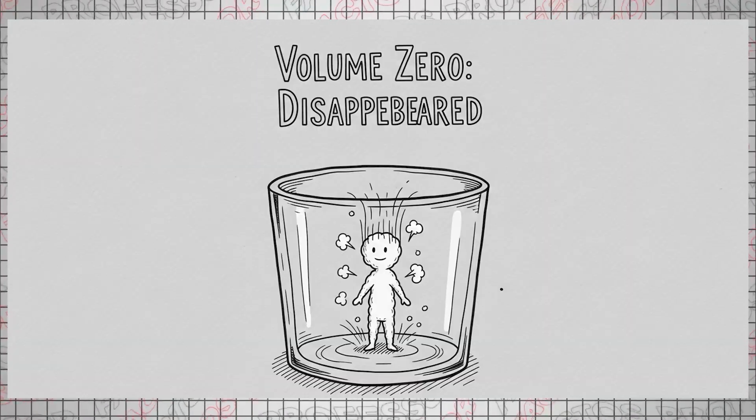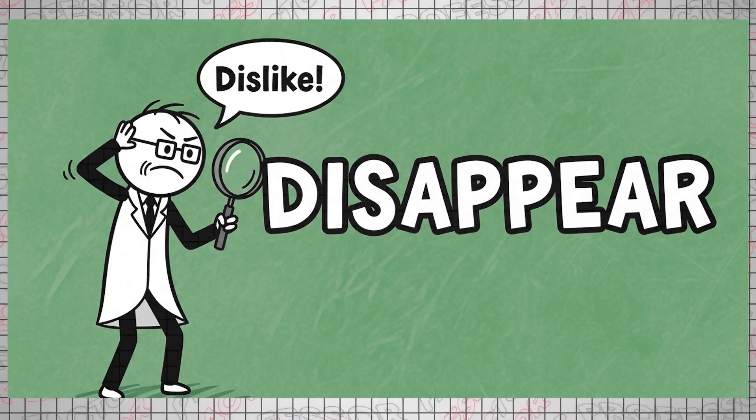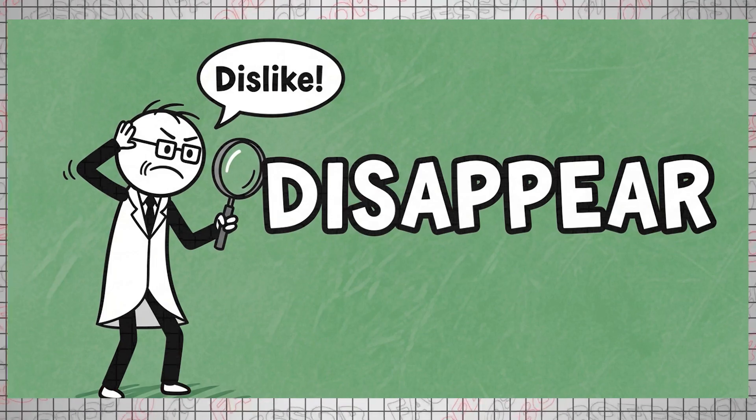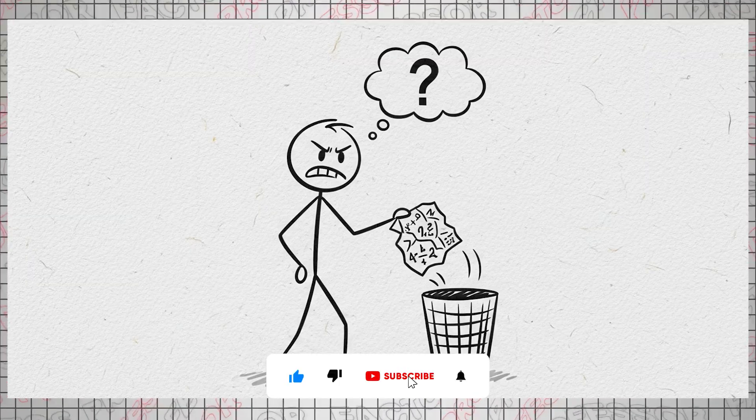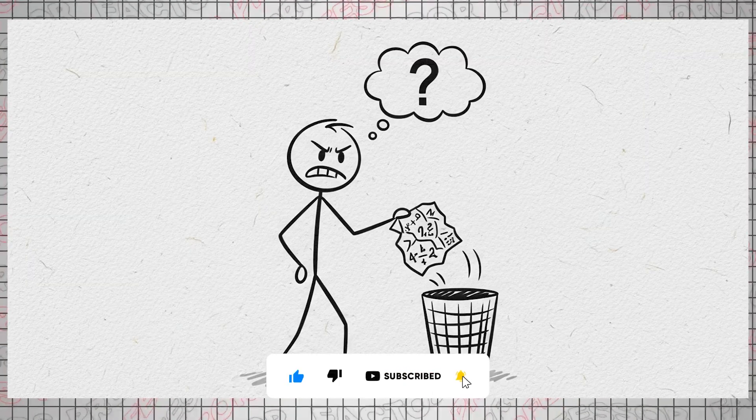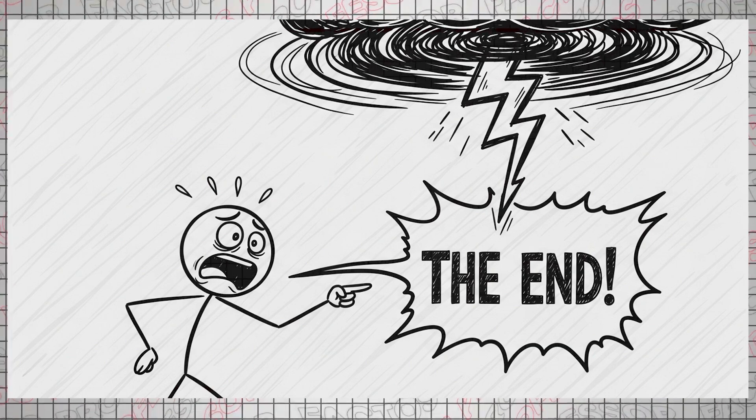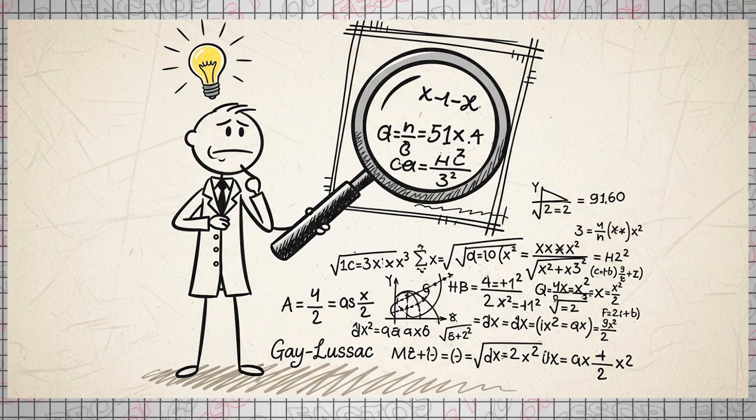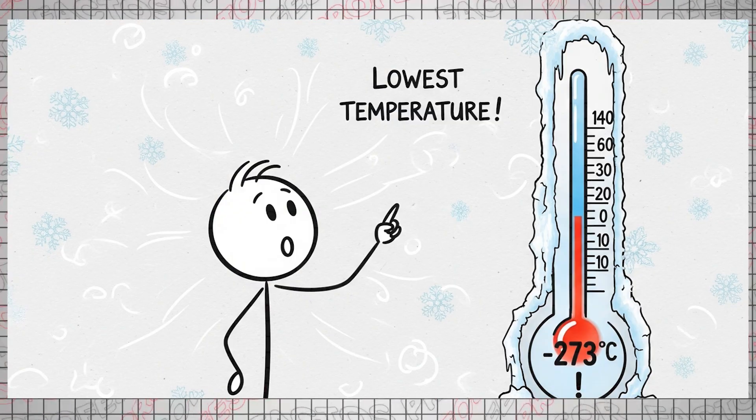To put it simply, this discovery means that when any gas is cooled down to minus two hundred seventy-three degrees Celsius, its volume would become zero, effectively causing it to disappear. Yes, disappear, a word science greatly dislikes. An ordinary person might have crumpled up such a bizarre calculation and tossed it in the trash. A superstitious individual might have even championed it as the devil's formula, the end of the universe.